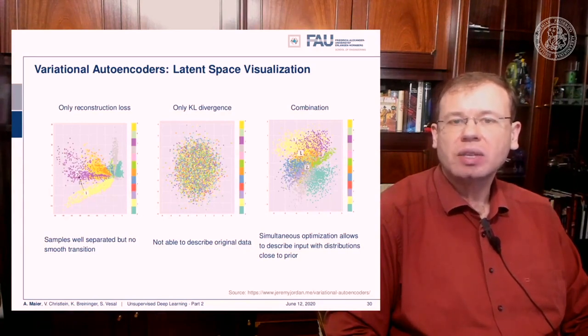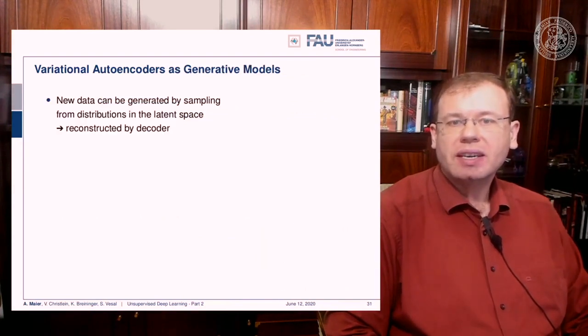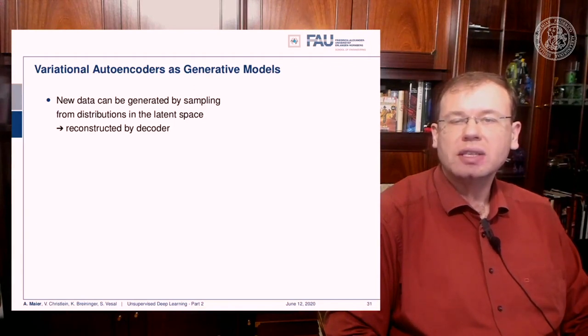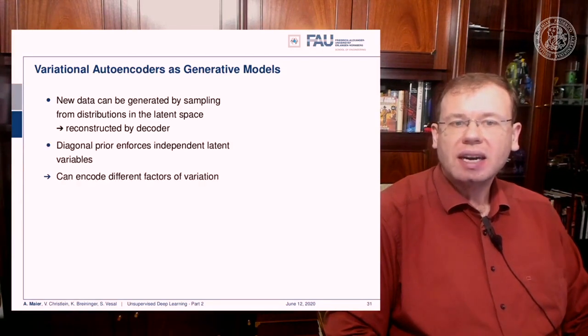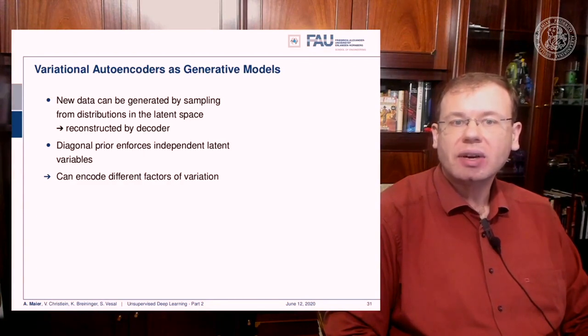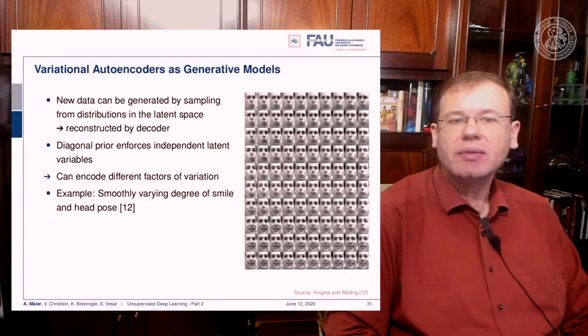So this is pretty cool because then we can generate new data by sampling from the distributions in the latent space, and then you reconstruct with the decoder. The diagonal prior enforces independent latent variables, so we can encode different factors of variation. And here we have an example where we smoothly vary the degree of smile and the head pose, and you can see that this kind of disentangling actually works.